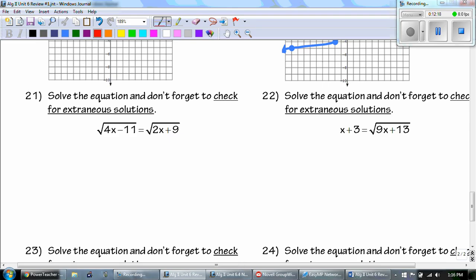Now we have to solve the equation and don't forget to check for extraneous solutions. Whatever's inside, I see that they're by themselves. So, I square them. I'm just going to write it over here. So, I have more room. 4x minus 11 and 2x plus 9. I want to solve that. I'm following the rules of SADMAP. So, I'm going to subtract 2x to both sides. To get 2x minus 11 equals 9. Add the 11 to both sides. To get 2x equals 20. Divide by 2. And we get that x equals 10.